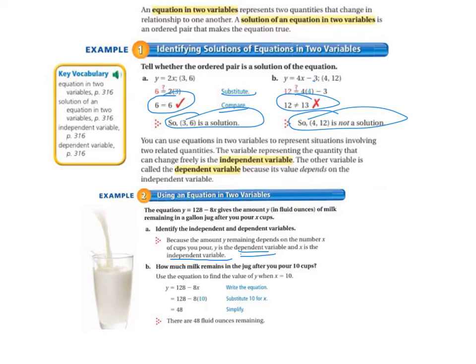Letter B says how much milk remains in the jug after you pour 10 cups. Use the equation to find the value of y when x equals 10. So we write the equation. Don't forget that step. And it says y equals 128 minus 8x. So we wrote that. And then we substitute 10 for x. So we have 8 times 10, so it's 128 minus 80. And when we simplify that, it equals 48. So there are 48 fluid ounces remaining.